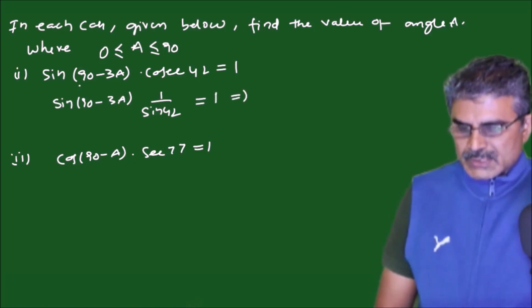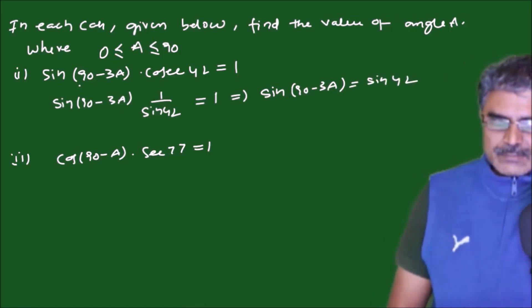Now consider this expression, bring this sin 42 to the other side, so you will have sin(90 minus 3A) on left hand side which should be equated to sin 42 on right hand side.